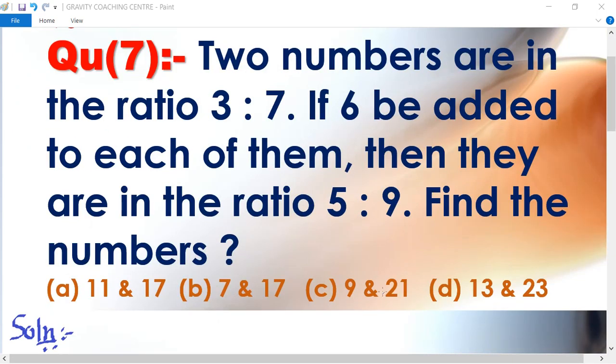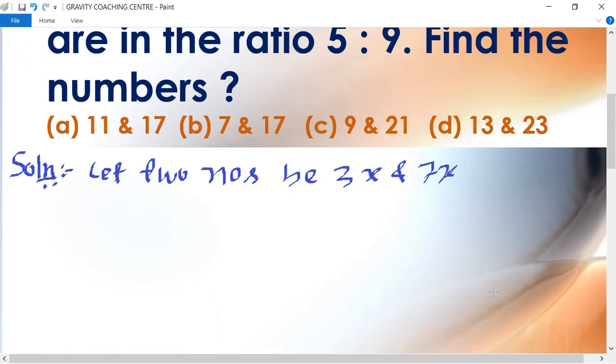So first we let the two numbers be 3 is to 7. Let two numbers be 3x and 7x, and according to question...